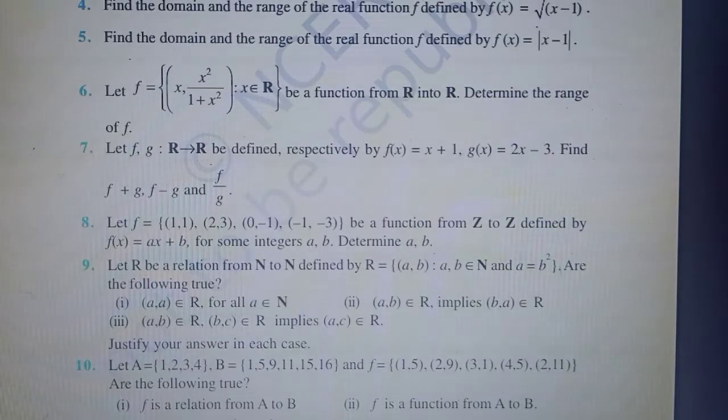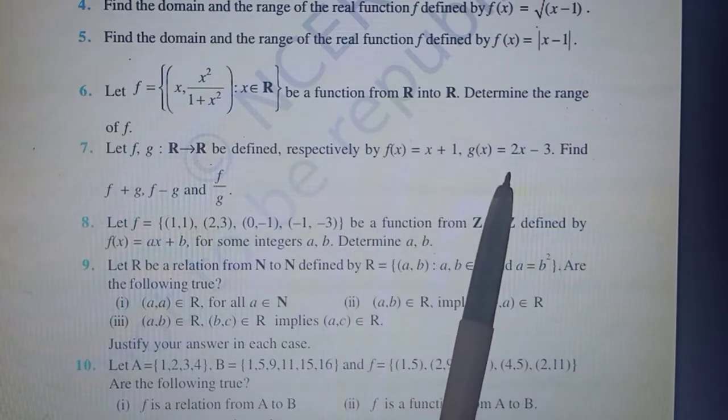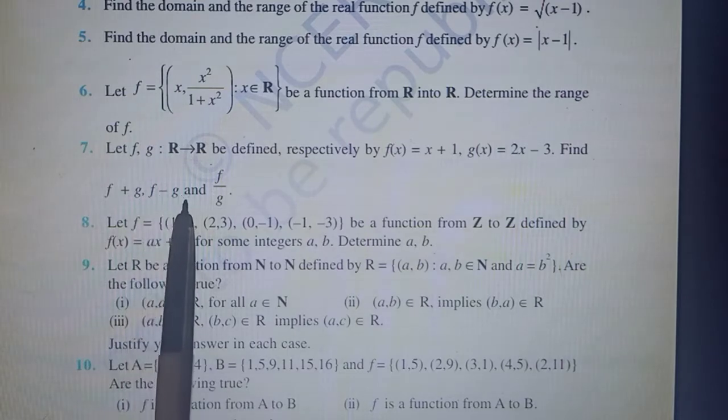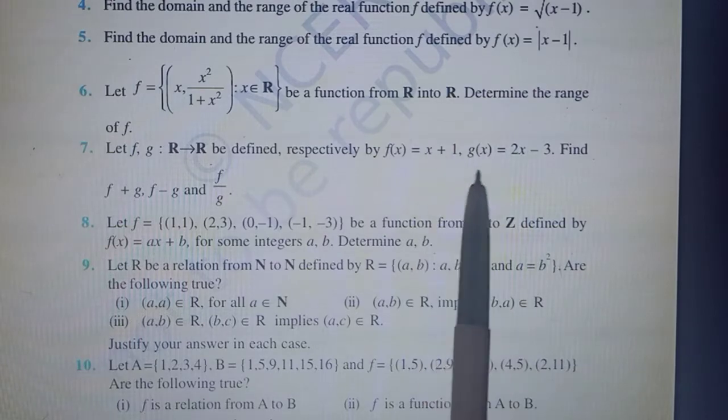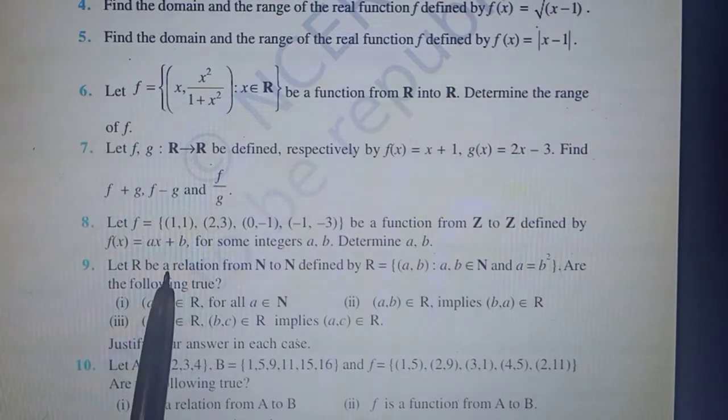The seventh question is very simple. f(x) is given as x+1, g(x) is given as 2x-3, and you have to find f+g, f-g, and f/g. Nothing difficult - simply add, subtract the functions and consider their quotient. I'm moving on to the eighth one.